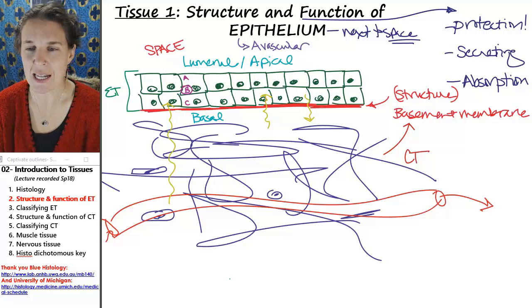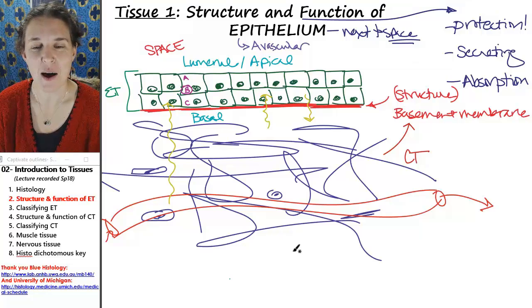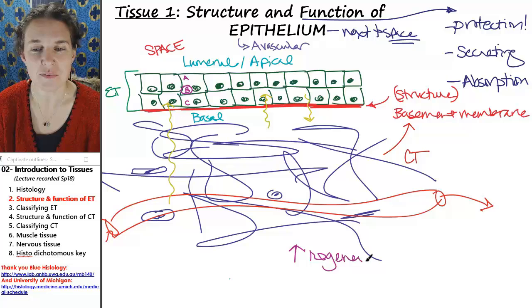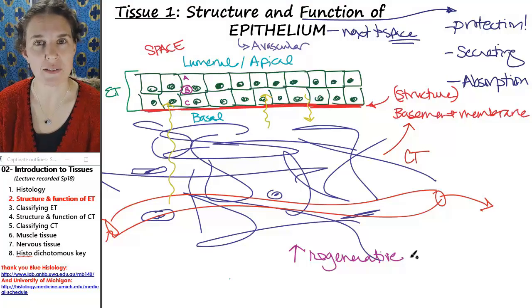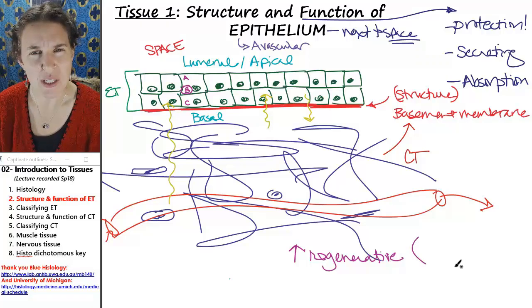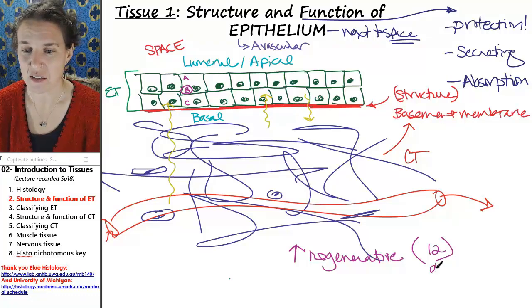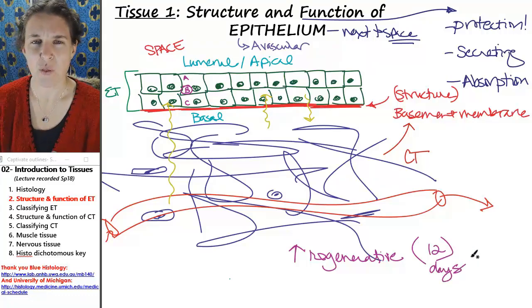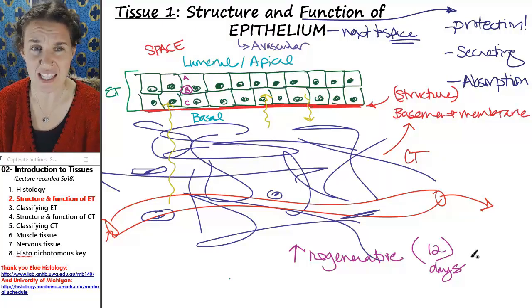The last thing that I have is epithelial tissues are highly regenerative. What does that mean? They replace the cells, replace themselves quickly. In fact, I want to say that the epithelium lining your digestive tract replaces itself completely every 12 days. So the entire lining completely regenerates itself every 12 days. That's fast. Your skin does not regenerate itself every 12 days.